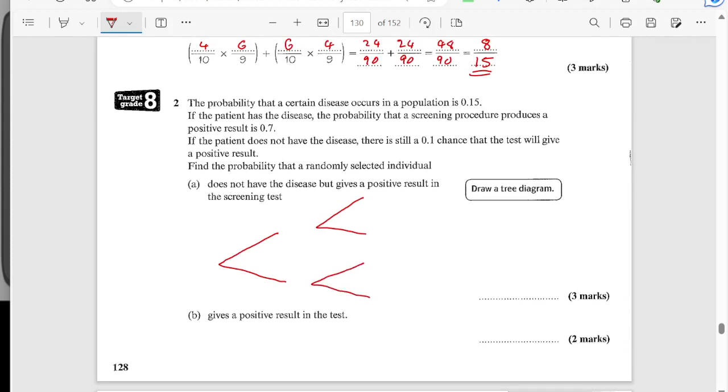So, a certain disease. So I'm going to say diseased and not diseased. So the probability a certain disease in a population is 0.15. So I'm just going to put information from the question first of all. If a patient has the disease, the probability that the screen produces positive. We've got positive and negative, positive and negative.